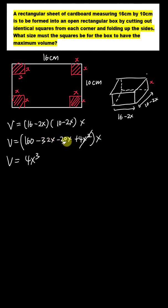Then this one is negative 52x multiply x again, which is negative 52x squared, so I solve both of these terms, and plus 160x. This one is the equation of my volume of the cuboid here.